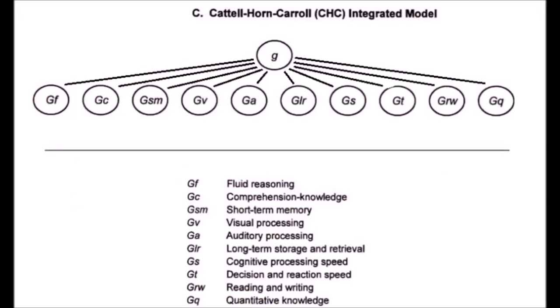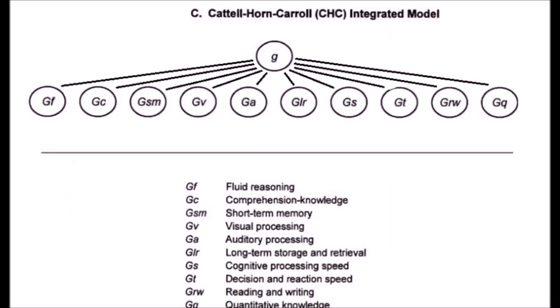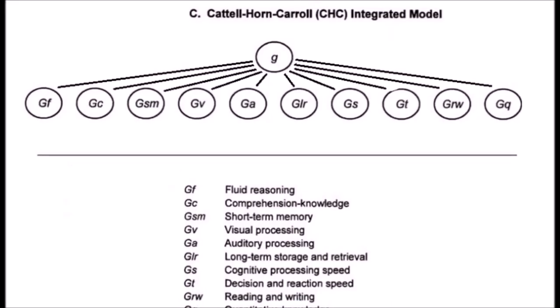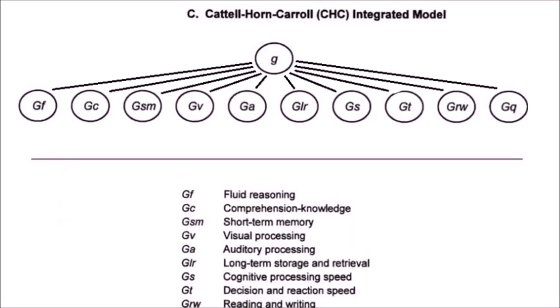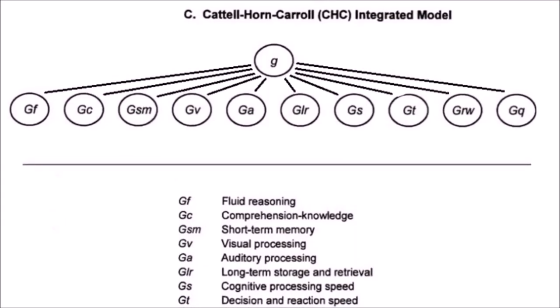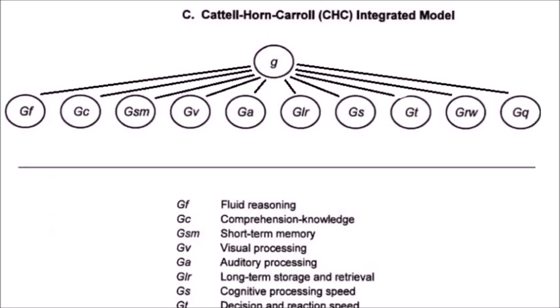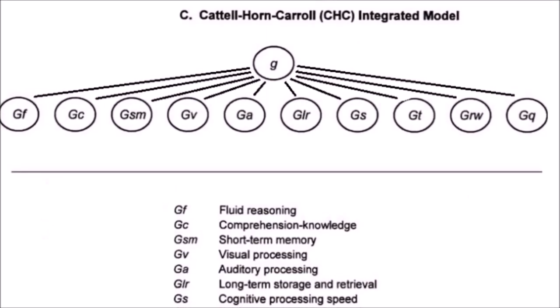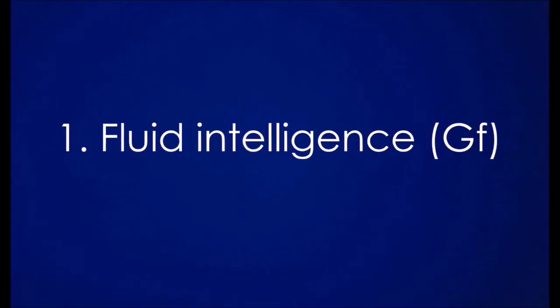In CHC theory, a hierarchy of factors is used. The G-factor is at the top. Under it are 10 broad abilities, which in turn are subdivided into 70 narrow abilities. The 10 broad abilities are: 1. Fluid intelligence, or GF, which includes the broad ability to reason, form concepts, and solve new problems using unfamiliar information or novel procedures.